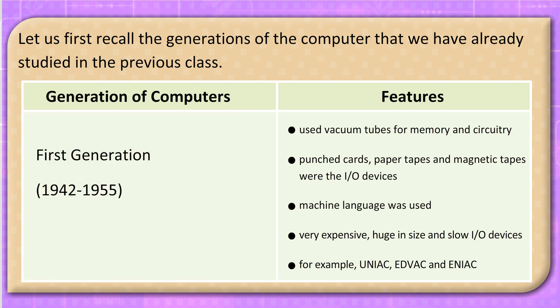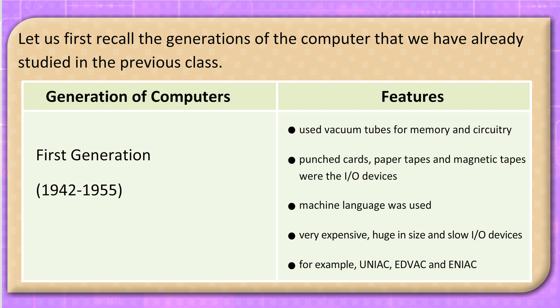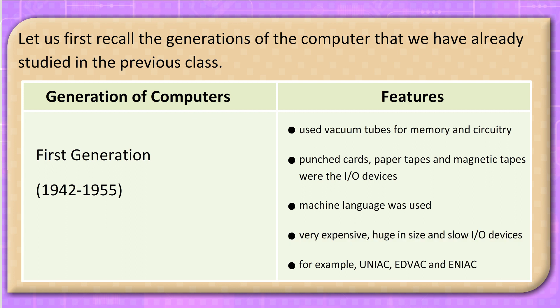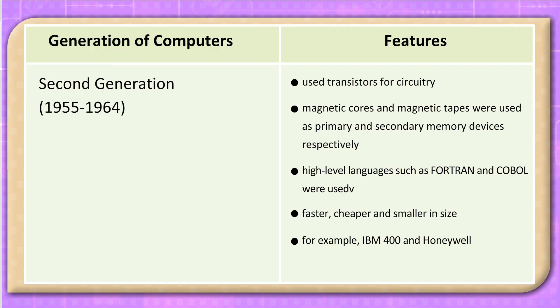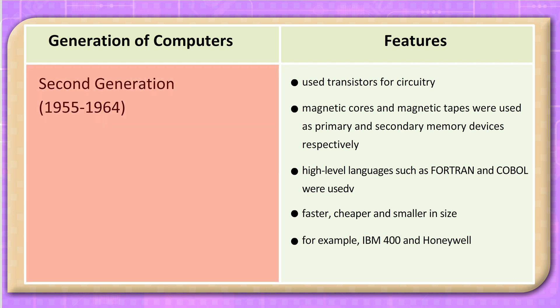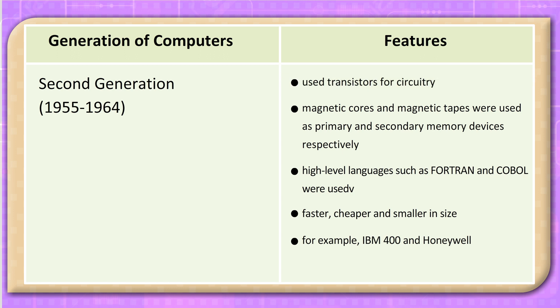First Generation, 1940–1955: Used vacuum tubes for memory and circuitry. Punched cards, paper tapes, and magnetic tapes were the I/O devices. Machine language was used. These computers were very expensive, huge in size, and had slow I/O devices. Examples include UNIVAC, EDVAC, and ENIAC.